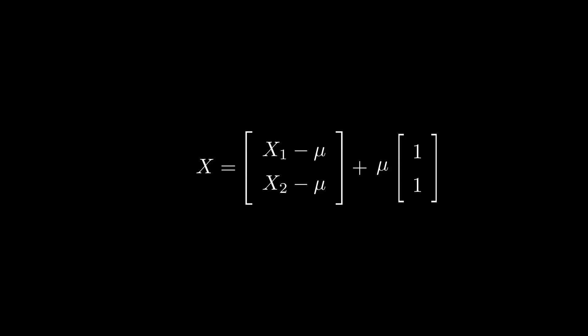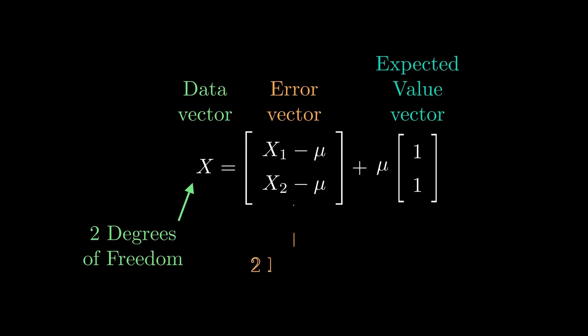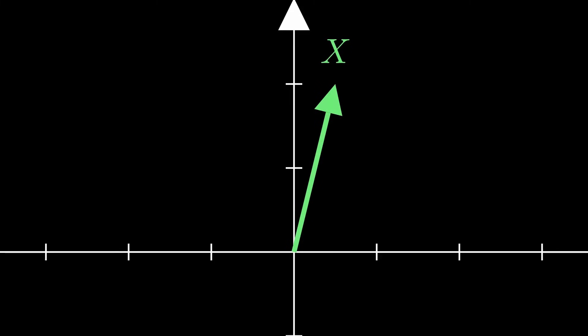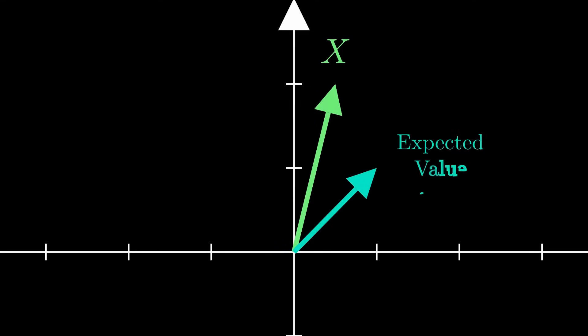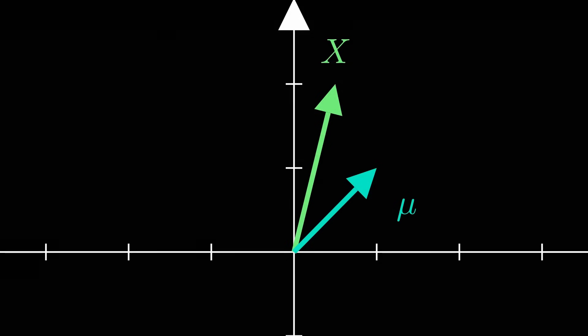To keep the naming clear, I'll call these new vectors the expected value vector and the error vector. That's because when you take a data point and subtract off the population mean, statisticians call that an error instead of a residual. Now it turns out that this error vector has two degrees of freedom, while the expected value vector has zero. How can that be? It's because, no matter what random numbers we generate, if they all come from the same distribution, then the expected value vector always points to the exact same spot. It can't land elsewhere on the line across different samples; it can only be on the same single point, right here.